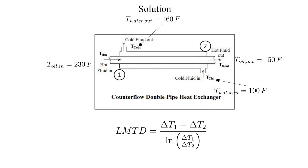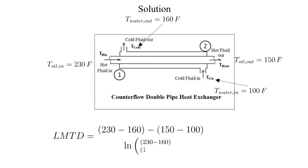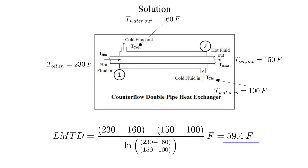You can swap those locations and get the correct answer, as long as you are consistent when you define your delta T's. Now let's plug in the provided temperatures and do the calculation. The log mean temperature difference is equal to 59.4 degrees Fahrenheit.